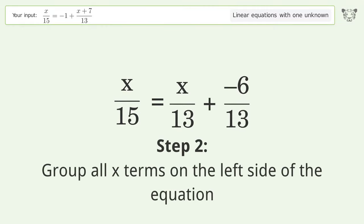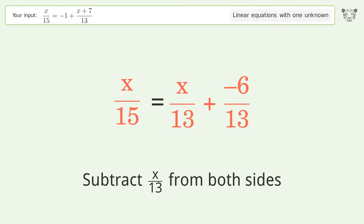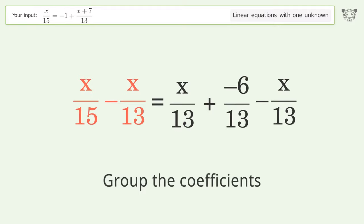Group all x terms on the left side of the equation. Subtract 10 over 13 from both sides. Group the coefficients.